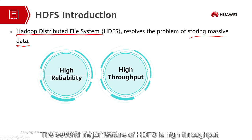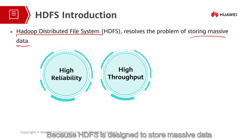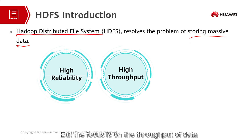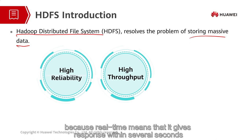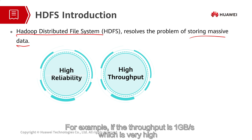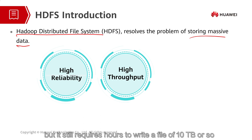The second major feature of HDFS is high throughput. Because HDFS is designed to store massive data, naturally it requires a relatively high throughput. But the focus is on the throughput of data, which does not necessarily mean the reading or writing process is in real-time. Because real-time means that it gives a response within several seconds. For example, if the throughput is one gigabyte per second, which is very high, it still requires hours to write a file of 10 terabytes or so.